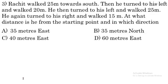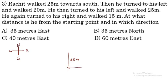Next question: Rachit walked 25 meters towards south. South is downward, north is up, east is right, west is left. So he walked 25 meters south. Then he turned to his left and walked 20 meters. When facing south, left is east, so he walked 20 meters east.